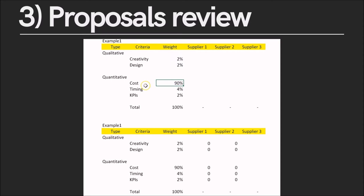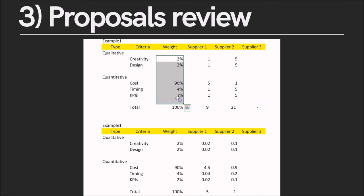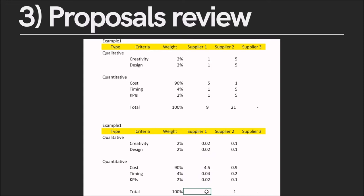Let's take an example. Here I assign a very low percentage to other criteria and prioritize cost with 90%. Supplier number one has very low scores in all criteria except cost, which I assign a five. Supplier two does the opposite — all high scores but a low score in cost. As you can see, it looks like supplier two has a higher score because it totals 21. However, we haven't applied the weight of each criteria yet. That's why you need to multiply. Once you multiply, you will see that supplier number one has a higher weighted score because cost, which is the most important criteria, is where supplier number one scores highest.